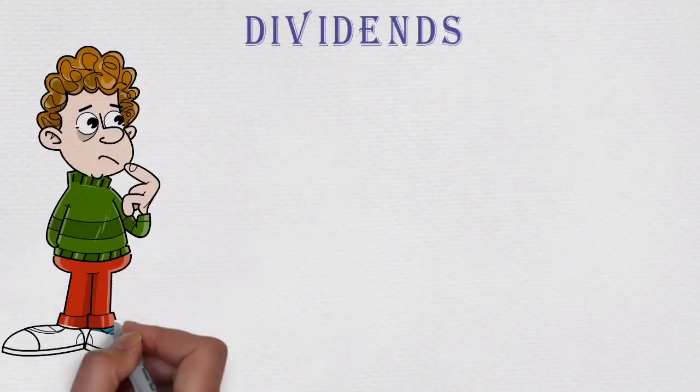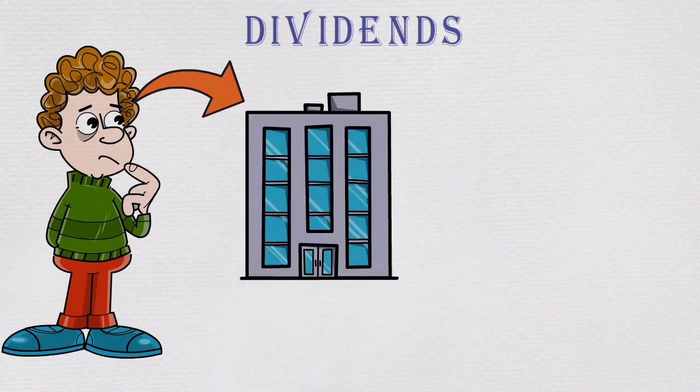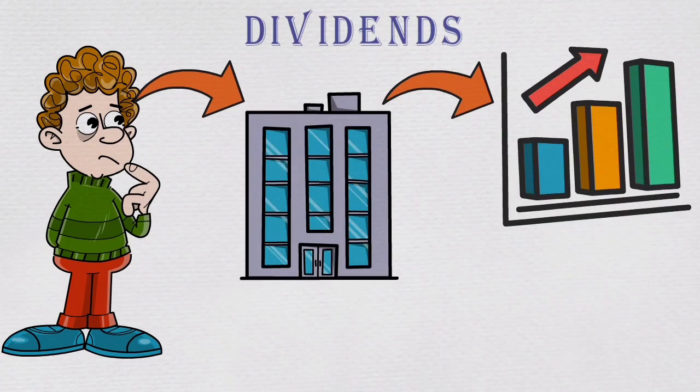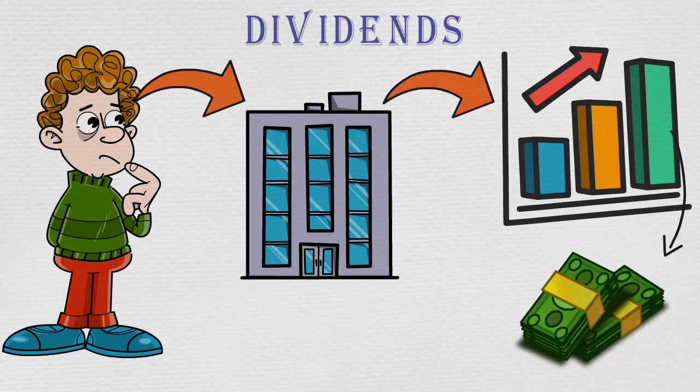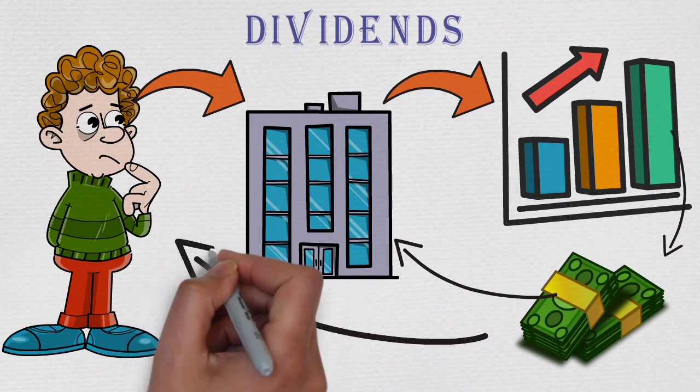Let's pretend you are a shareholder and part owner of a certain company. When that same company makes a profit, it has a lot of choices what to do with the earned money. Company can reinvest a profit towards company growth or pay for the owners.